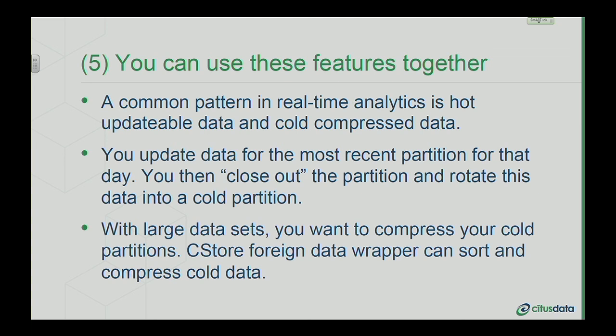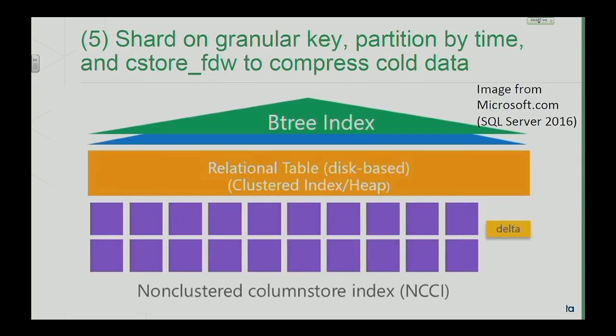What's exciting is that you can use these new features and extensions together. A common pattern in real-time analytics: you have some hot data that you frequently update — say, today's data. After a day, you close out your partition and rotate it into cold storage. With large data sets, there's another Postgres extension called CStore — C-Store foreign data wrappers. You can sort that data, compress it with CStore, and put it into a partition. So at the top you have regular heap-based structures, you update them, and after a while you close the shard and get it into a columnar storage format with compression applied.